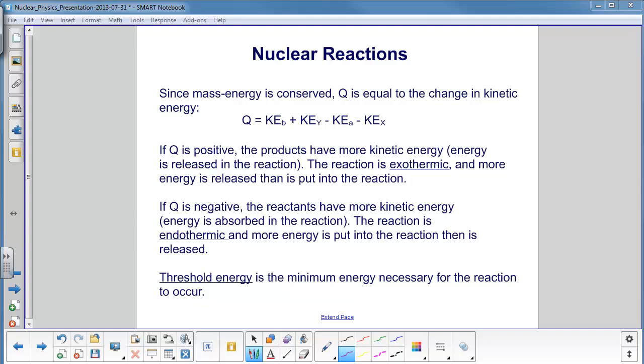Since mass energy is conserved, Q is equal to the change in kinetic energy. If Q is positive, and remember Q is the mass defect, which is the mass of the reactants minus the mass of the products, if Q is positive the products will have more kinetic energy, so energy will be released in the reaction. This reaction is exothermic, and more energy is released than is put into the reaction.